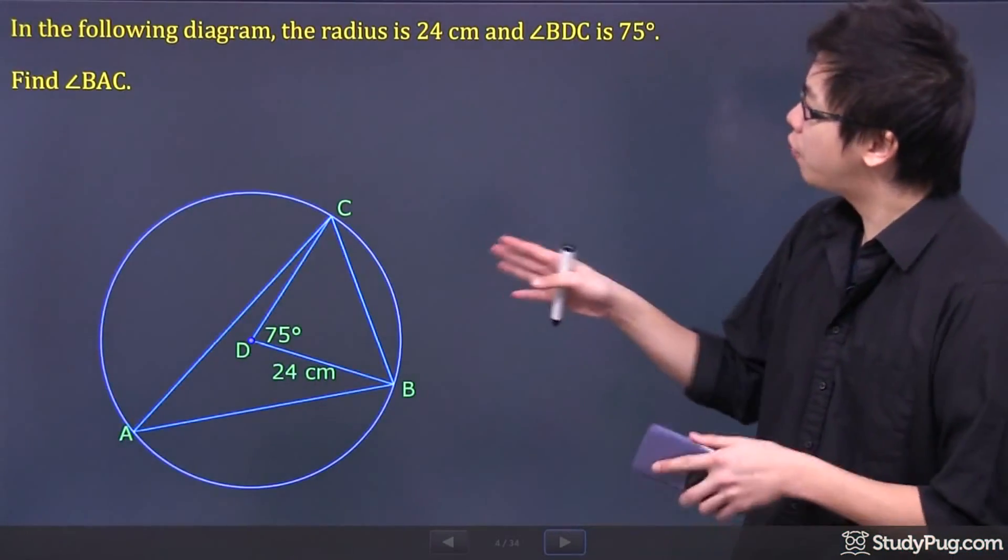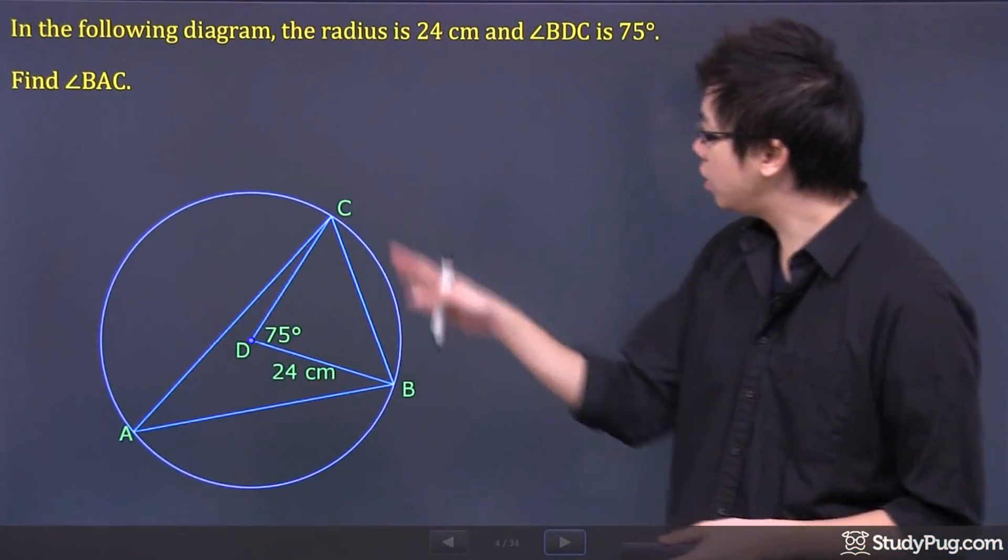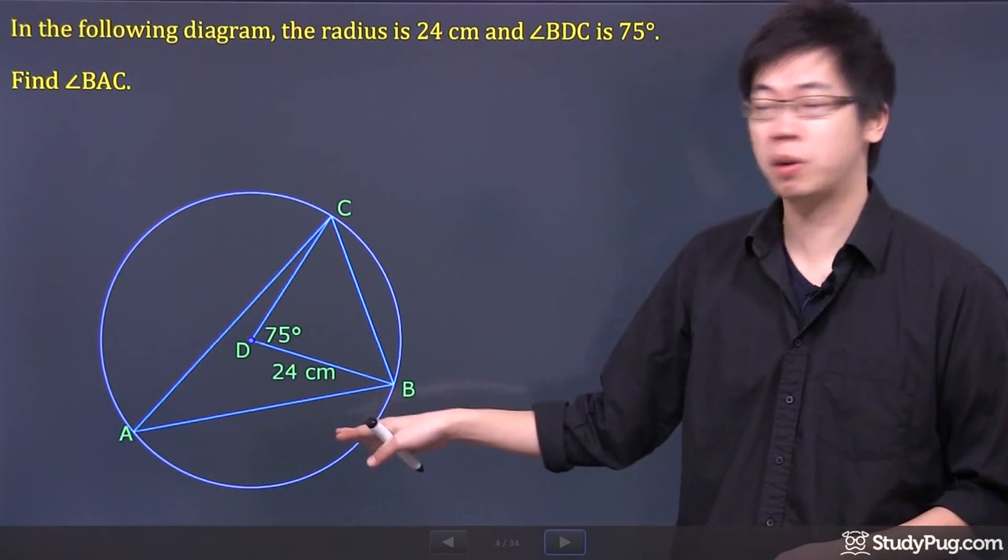Hi, welcome to this question right here. In the following diagram, which is here, the radius of the triangle is 24 centimeters.